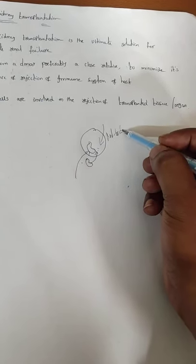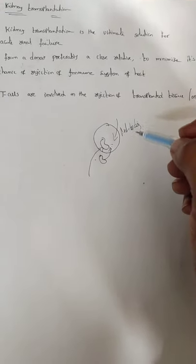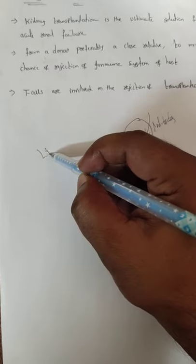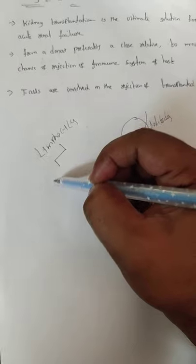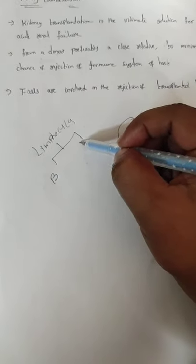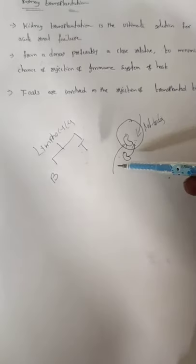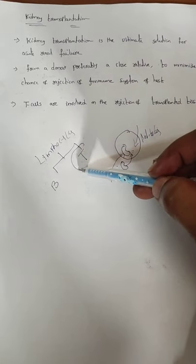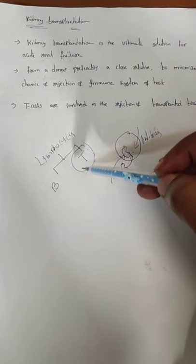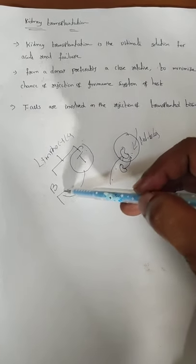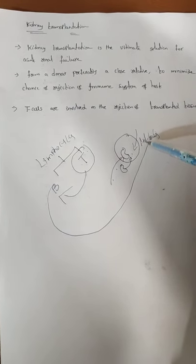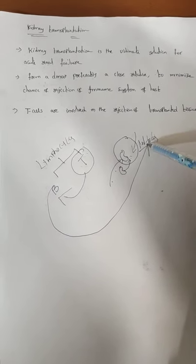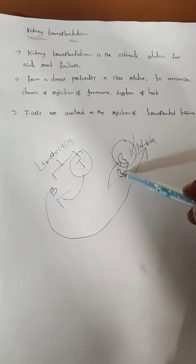How does the body produce antibodies? In our body, lymphocytes are present in white blood cells. Lymphocytes are of two types: B lymphocytes and T lymphocytes. If any foreign particle enters the body, first the T lymphocytes identify it. The T lymphocytes send a message to the B lymphocytes. The B lymphocytes then produce antibodies, and these antibodies attack the antigen — the foreign particle.